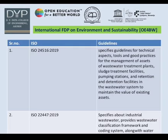These are some ISO standards. First, ISO 24516-2019 specifies the guidelines for technical aspects, tools, and good practices for the management of assets of wastewater treatment plants, surge treatment facilities, pumping stations, etc. Second, ISO 22447-2019 specifies about the industrial wastewater classification system and provides a wastewater classification framework and coding system along with water.